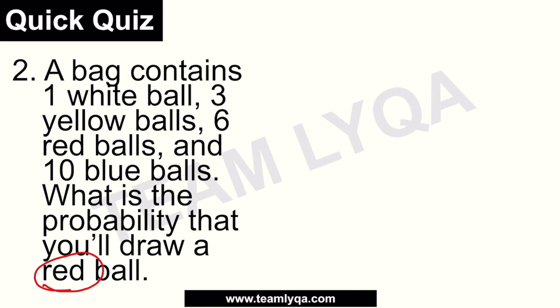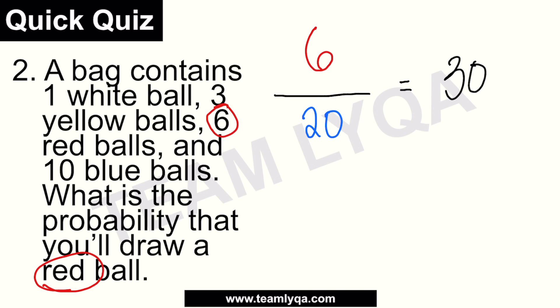Next question, same bag — so the denominator is still twenty. This time we're looking for a red ball. We have six red balls total. So that's six over twenty. In lowest terms, three over ten, or thirty percent.